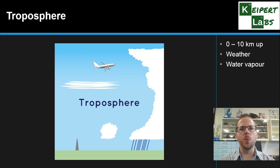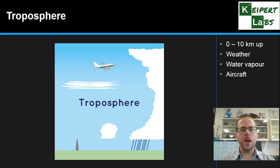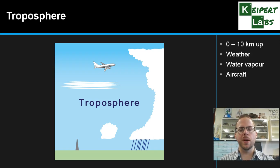Most of the water vapour in the atmosphere is contained in the troposphere, so you get cloud formation and then precipitation in the form of rain, hail, snow, or sleet, depending on the climate and latitude. It's also where most aircraft fly — some can fly in the stratosphere, like the Concorde, but most stay in the upper layers of the troposphere.